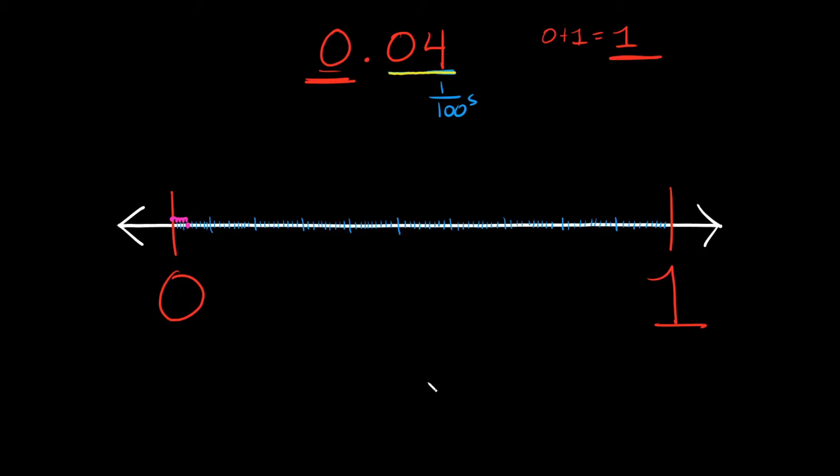So we're gonna start at 0 and then we're gonna move over 4 spaces. So 1, 2, 3, 4. Boom, right there. That is 0.04. Now it'd obviously be kind of ridiculous if you really had to sit here and draw 100 little tick marks. So a much faster way of doing that is instead of drawing a hundred of them, draw 10 of them.